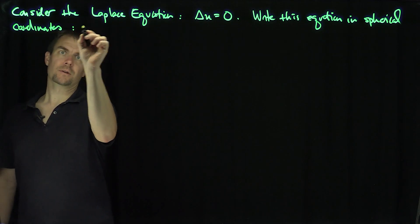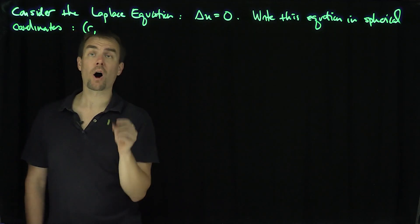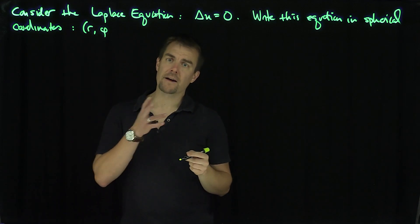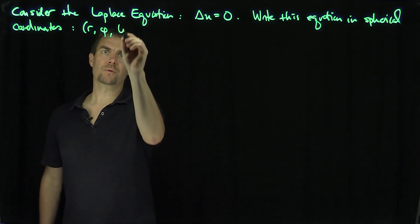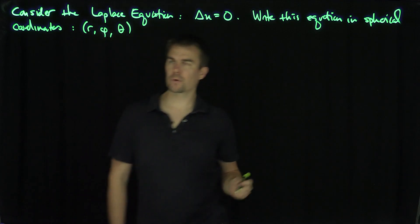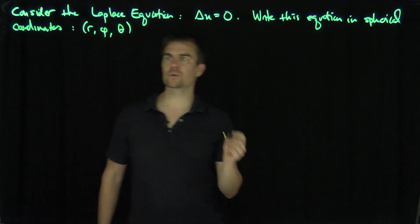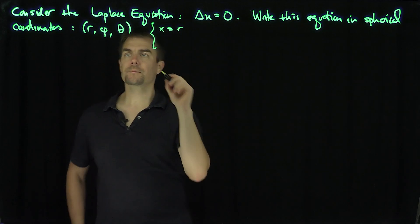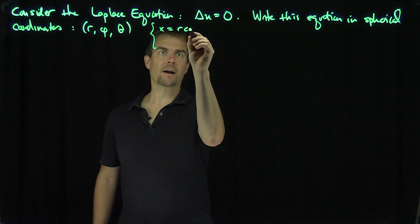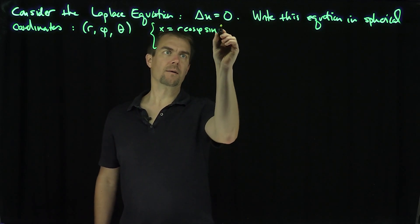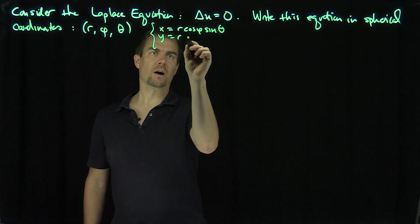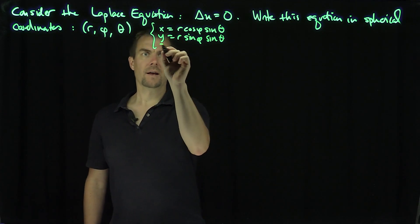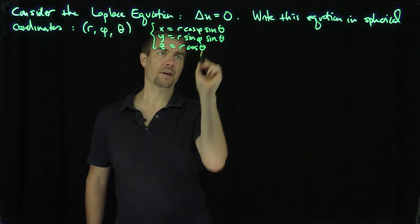We're going to use the physics version of spherical coordinates, which uses r, and then the tangent inverse of y over x is going to be phi in this case. In previous videos we've called it theta. With this configuration, we have that x is r cosine(φ) sine(θ), y is r sine(φ) sine(θ), and z is r cosine(θ).